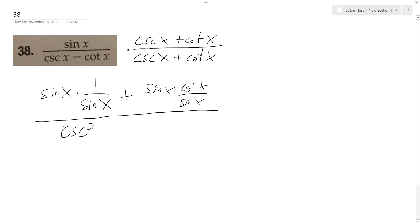And then this becomes cosecant squared x minus cotangent squared x. So these cancel out, this equals one, so that works out nicely. We're just left with one plus cosine x.